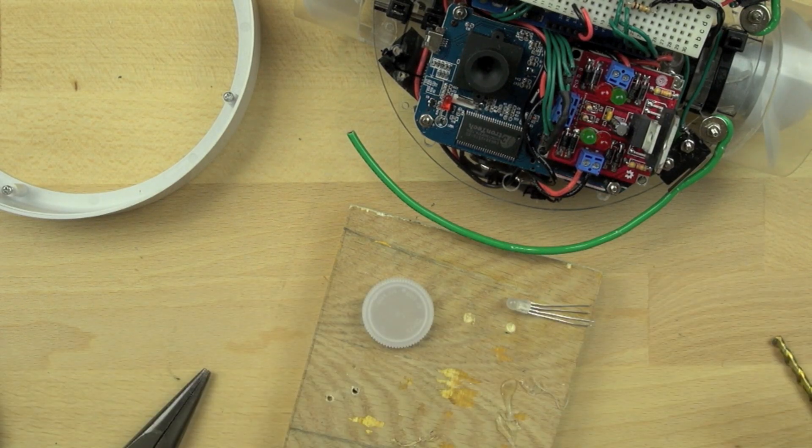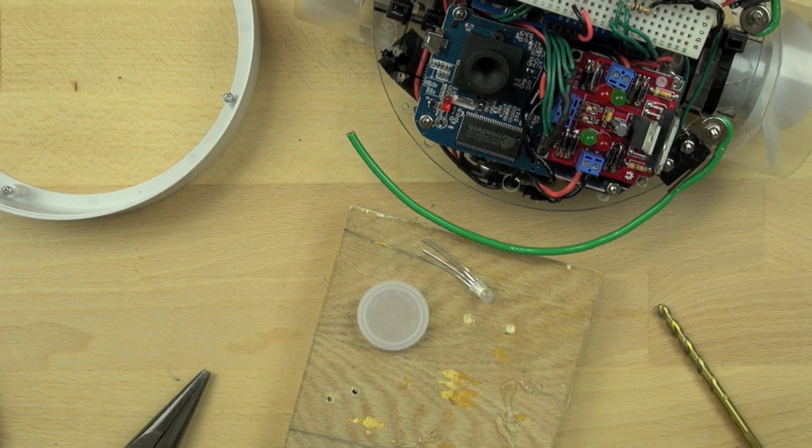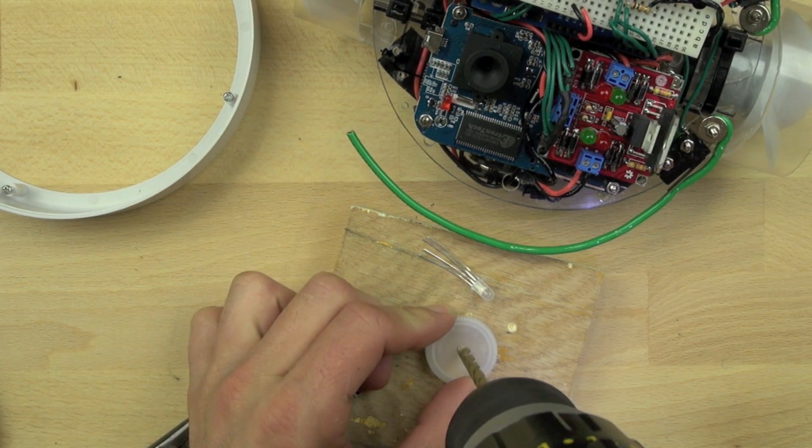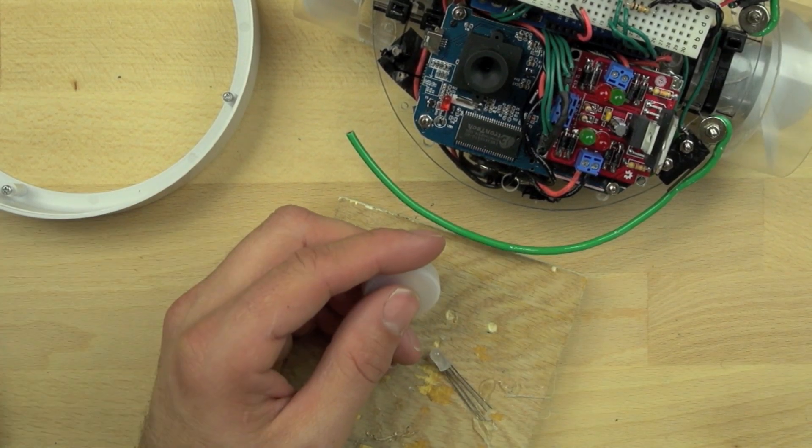Okay, so now we're going to give Bitsy some eyes. We're going to use tricolor LEDs and bottle caps. We're matching the LED up with a drill bit so that we can put a hole in the center of the bottle cap. And the LED will basically serve as a pupil and the bottle cap will serve as an iris.